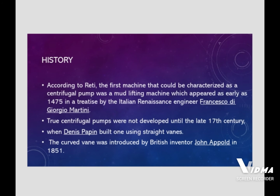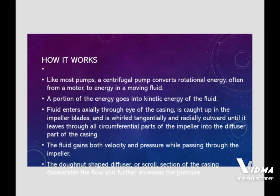Like most pumps, a centrifugal pump converts rotational energy — often from a motor — to energy in the moving fluid. A portion of the energy goes into kinetic energy of the fluid. The fluid enters axially through the eye of the casing, is caught up in the impeller blades, and is whirled tangentially and radially outward until it leaves through all circumferential parts of the impeller into the diffuser part of the casing. The fluid gains both velocity and pressure while passing through the impeller.